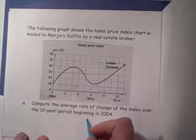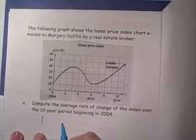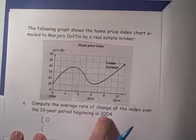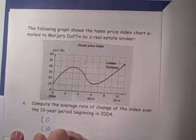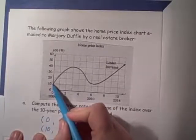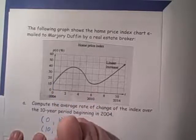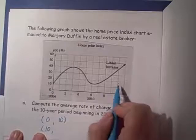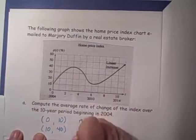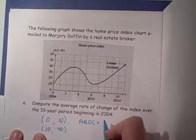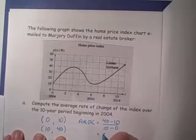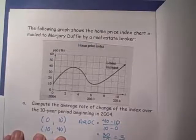We need to find an average rate of change. So let's find the two points we're looking at. 2004 to 2014 is 10 years, so our T values are 0 and 10. The y-value at 0 is 10, and the y-value at 10 is 40. The average rate of change — the slope between those two points — is 40 minus 10 over 10 minus 0, so that's 30 over 10, which is 3.